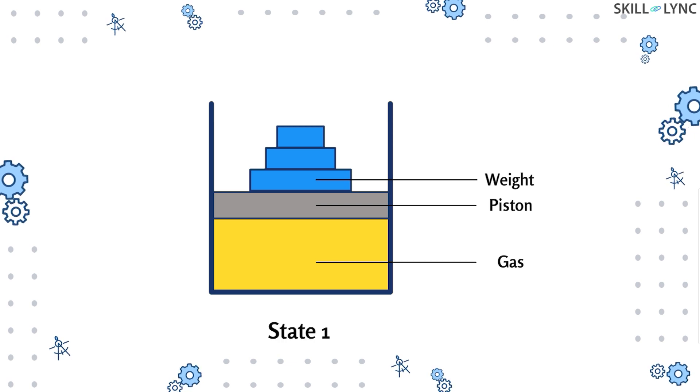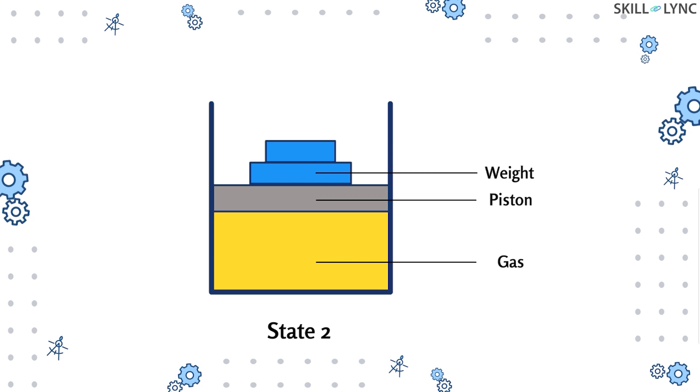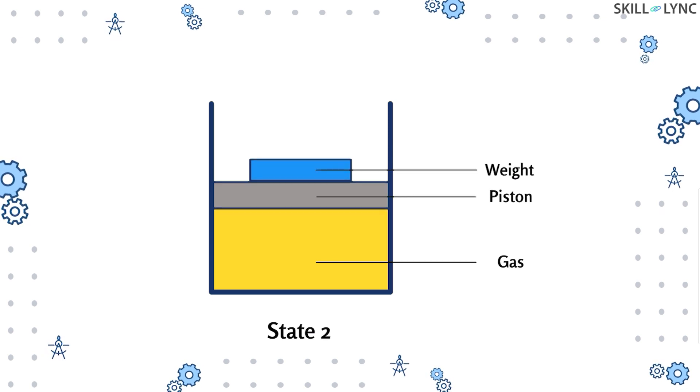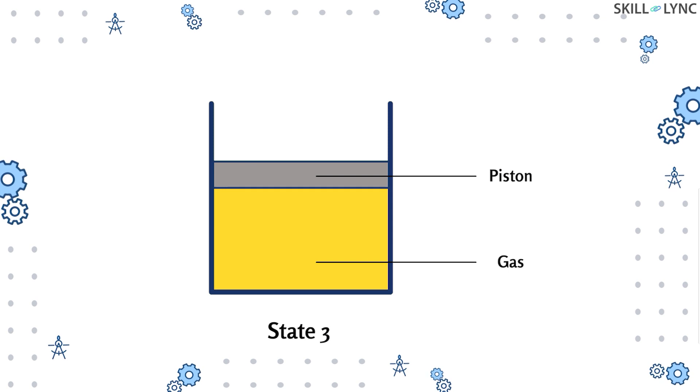Let's call the initial state with three weights on the piston as state one. Now one of the weights is removed. Because of this, the pressure and volume in the system changes. Let's call this new state as state two. Similarly, another weight is removed and the new state, let's say state three, is obtained. Finally, the last weight is removed and the final state is obtained.